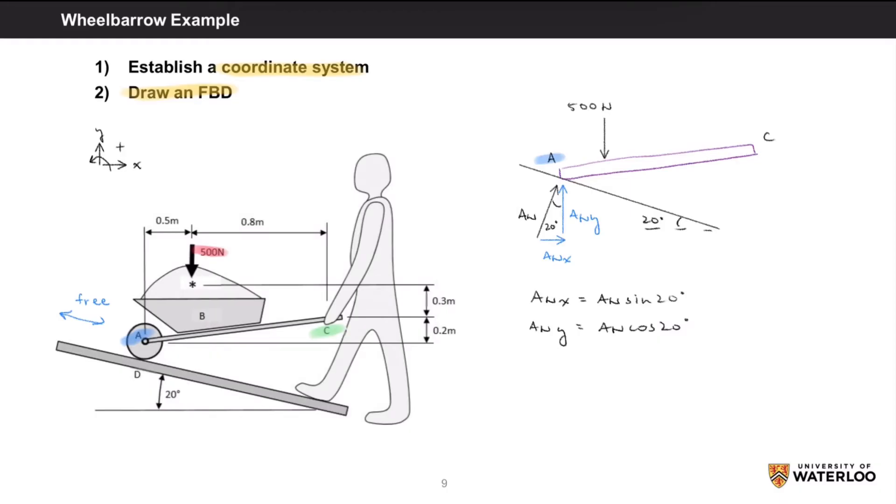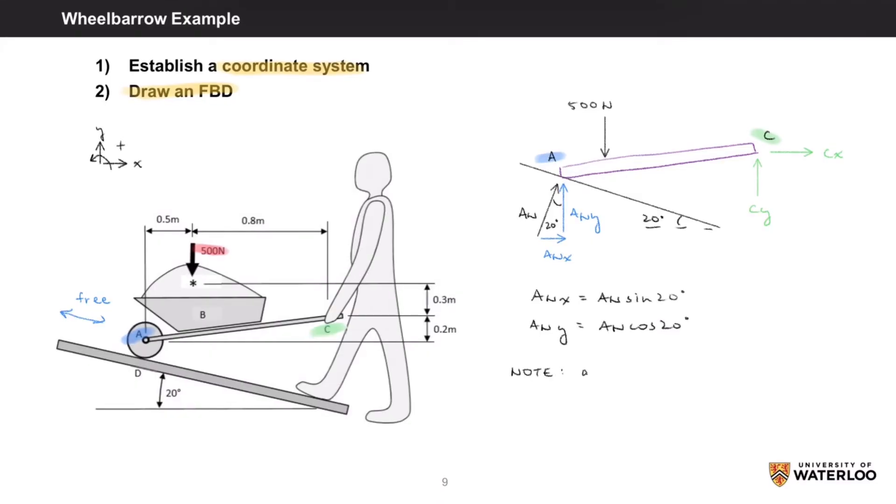And finally we have the contact force at C, which has an unknown magnitude and direction. So we'll represent this unknown force by its X and Y components CX and CY. Once we solve for these component forces, we can use the Pythagorean theorem to solve for our resultant force C. I'll assume that CX and CY are acting along our positive directions, even though intuitively we know that CX should be acting to the left. Having our arrow point to the right will just make our analysis a bit more clear.